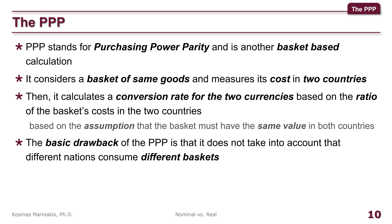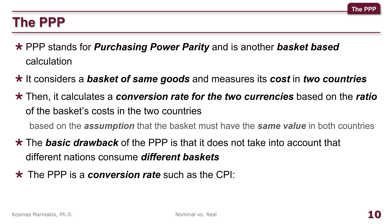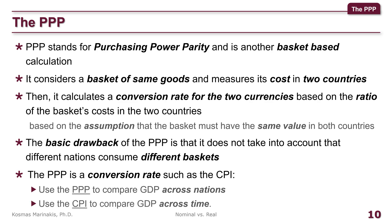The PPP conversion is based on the logic that the basket must be worth the same in both countries. The basic drawback of the PPP is that it does not take into account that different nations consume different baskets. Compare, for example, the American, the Mediterranean, and the Asian diet, and you will see that they feature very different ingredients. Thus, the products that people buy in those regions are also very different. Yet, the PPP conversion is way better than just using the exchange rate. Finally, here is a tip: when you want to make the GDP comparable across nations, use the PPP GDP. When you want to make the GDP comparable across time, from year to year and for the same nation, use the CPI.